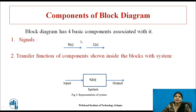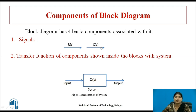Now we consider the components of block diagram. There are four basic components. The first is signals. R(S) is the reference signal and C(S) is the controlled signal. R(S) is the reference input, which is the Laplace transform of r(t), and C(S) is the controlled output, which is the Laplace transform of c(t).